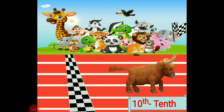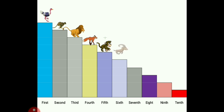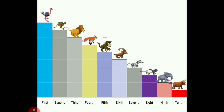Dear students, the race is over now. With the help of a graph we will see the animals and their positions. Do you remember? On first position was ostrich, on second was cheetah, on third was the king of the jungle, fourth was Mr. Fox, fifth was Mr. Monkey, sixth was the Himalayan goat, seventh was zebra, eighth was our little mouse, ninth was Mr. Elephant, and on last position was our bull. So this is the graph of the race — we have ordered the animals in ordinal numbers according to their position.